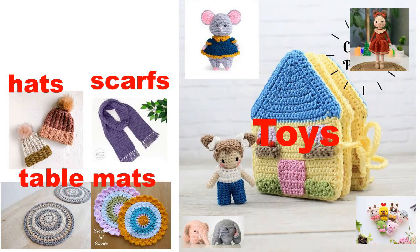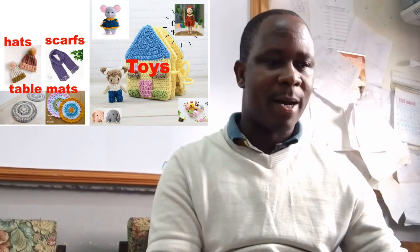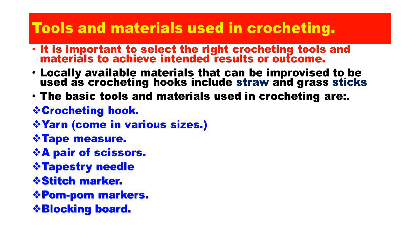We have various examples that we have mentioned: scarf, table mat, toys, among others. It is important to select the right crochet tools and material to achieve the intended results. There are also locally available materials you can use to improvise when making a crochet hook, including straw and grass sticks.